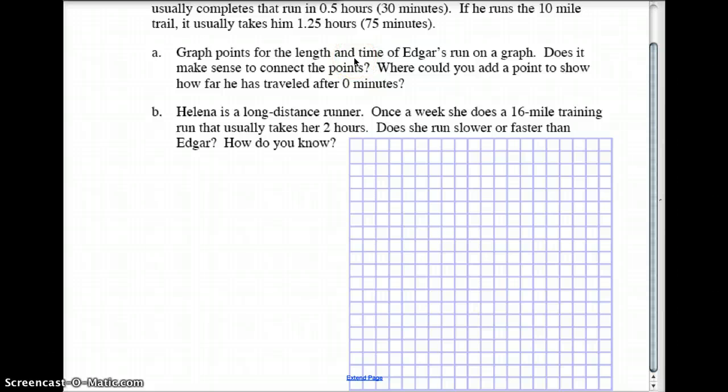So you're going to graph those two, and then you're going to ask yourself, does that make a straight line? Well, between the two points you should say yes it would, but you also might want to take that back from a starting point. How far would Edgar run in zero minutes? Think about it. Yeah, he wouldn't go anywhere in zero minutes.